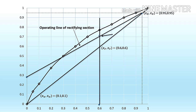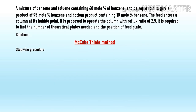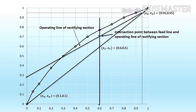This gives us the intersection point between the feed line and the operating line of the rectifying section. Due to this intersection, there is no need to separately find the slope and intercept for the stripping section operating line. The operating line of the stripping section is drawn through the point (0.1, 0.1) on the diagonal, passing through the intersection point of the feed line and rectifying section operating line.